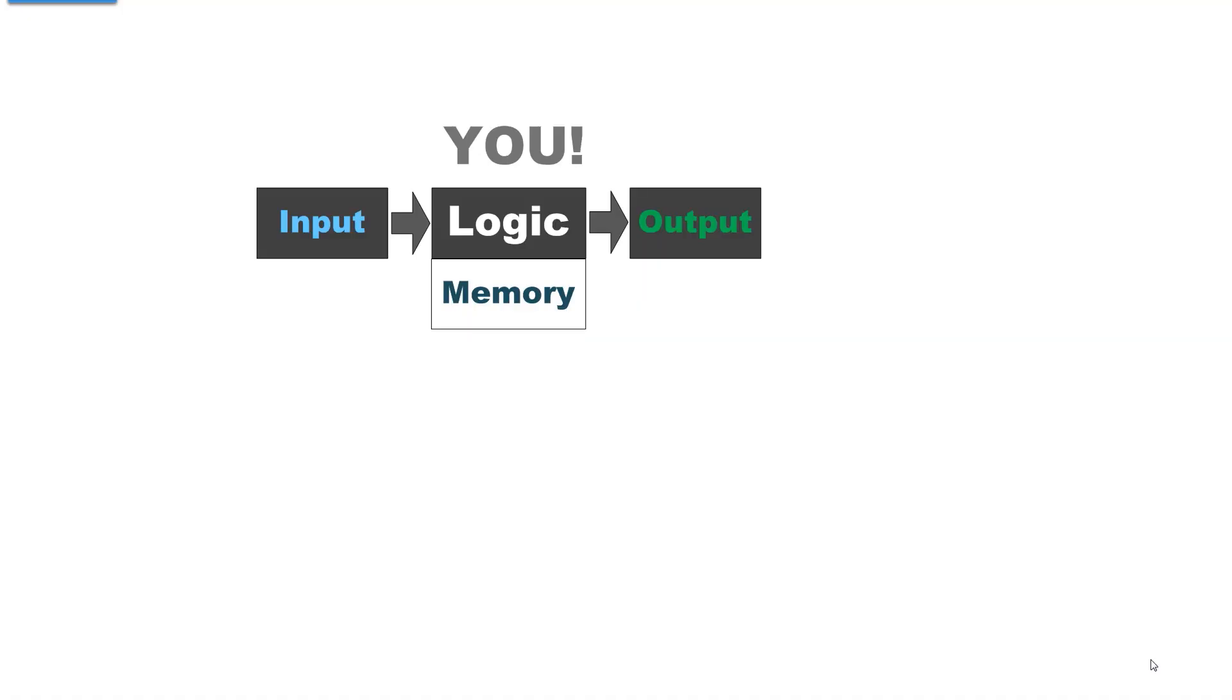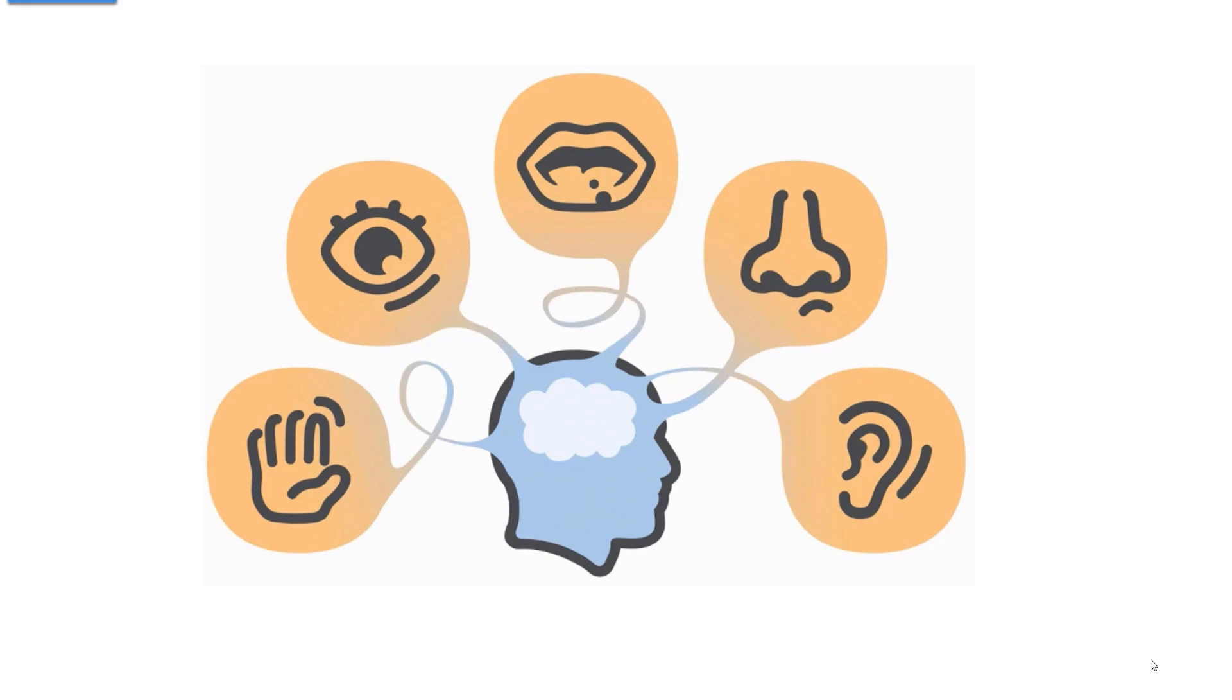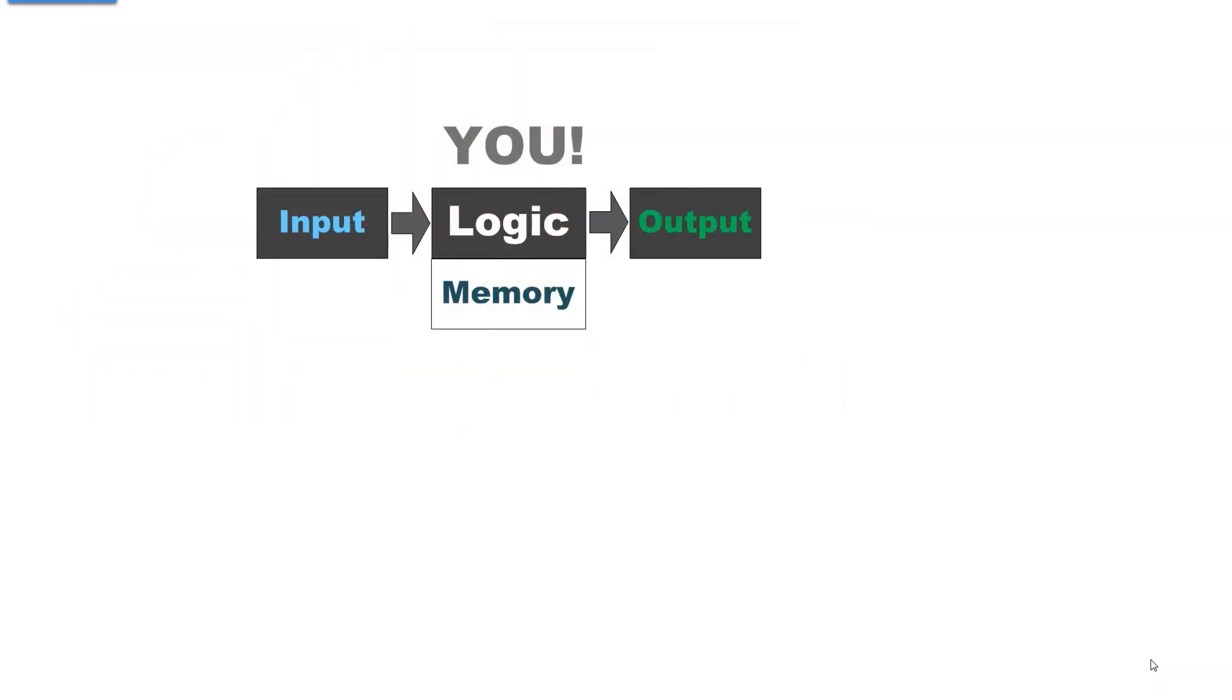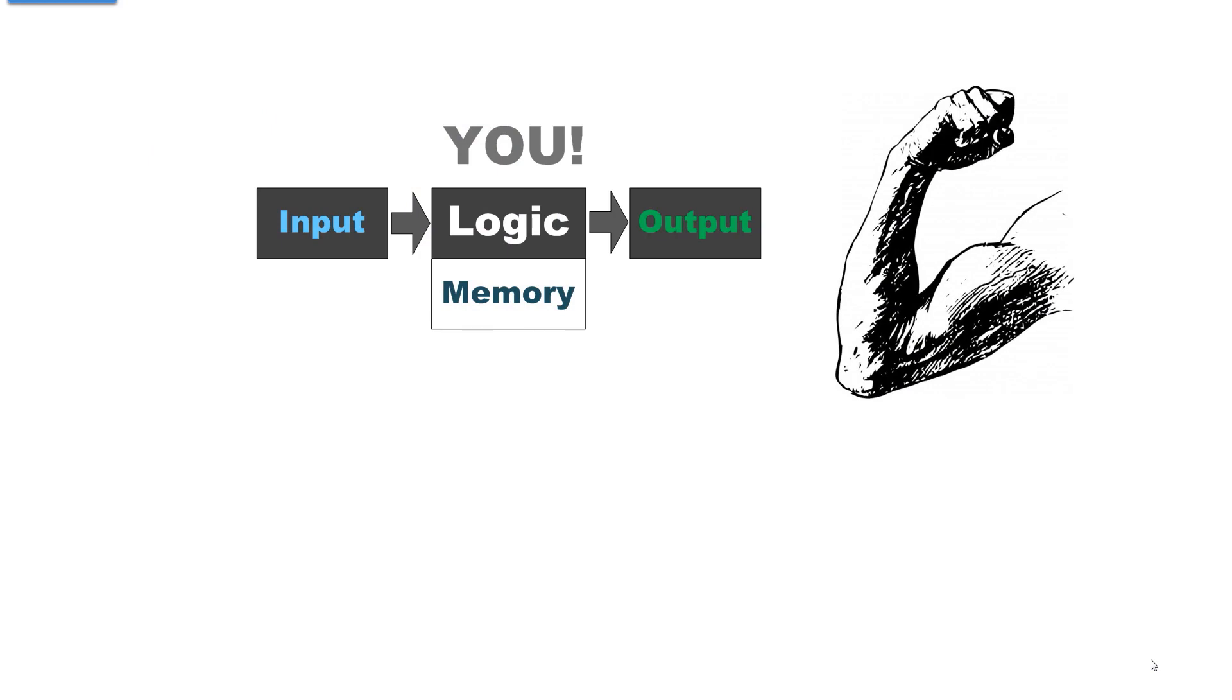Your logic originates in your brain. It is a result of something that you want to accomplish, which is stored in your memory, and the result of your observation from your five senses. Now, we're not going to use all five senses in our example. That is what you have for input, and your output from your logic is a muscular action.